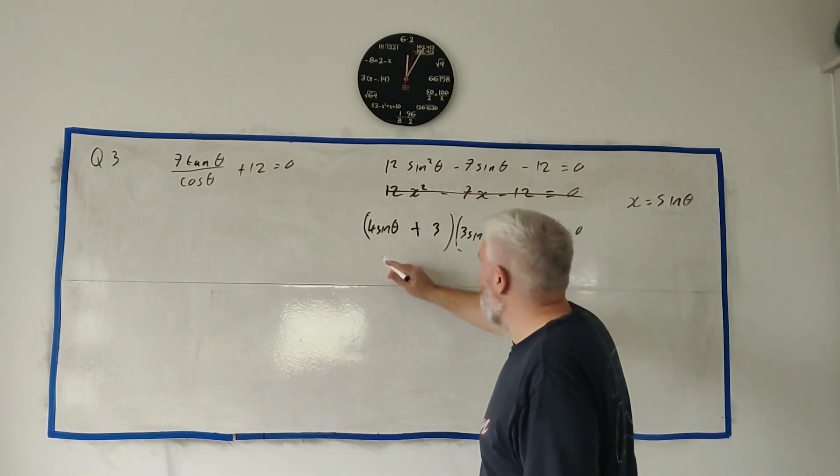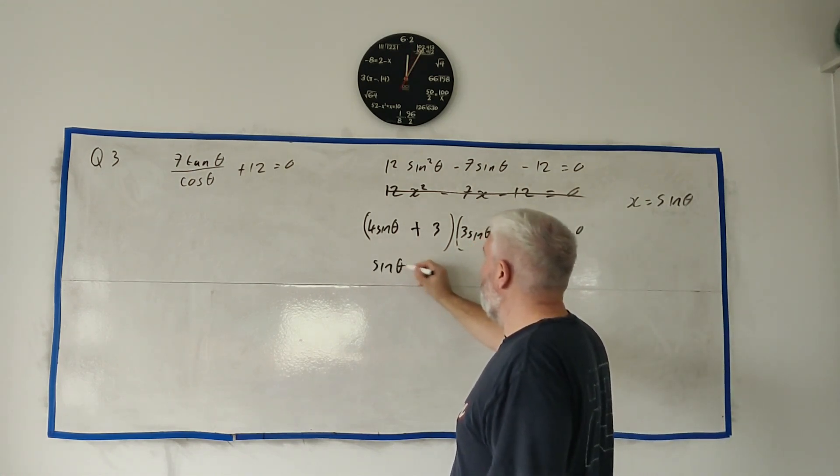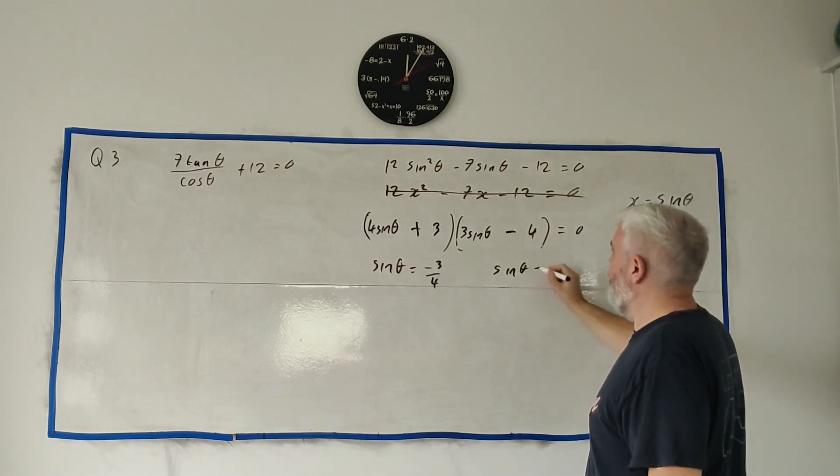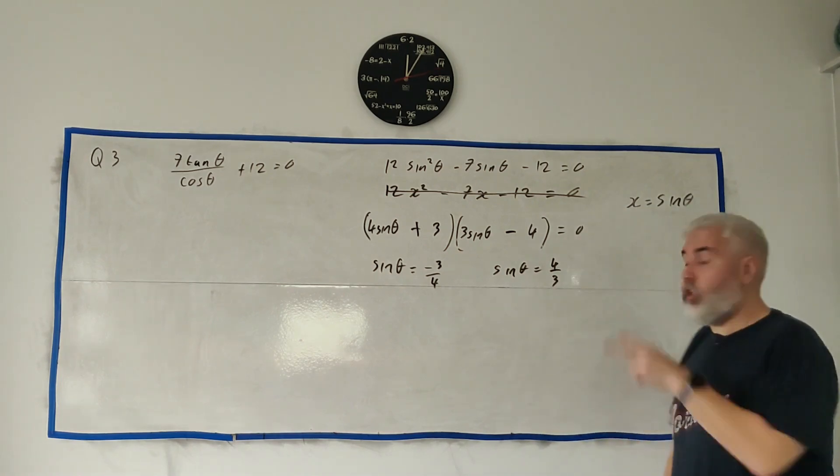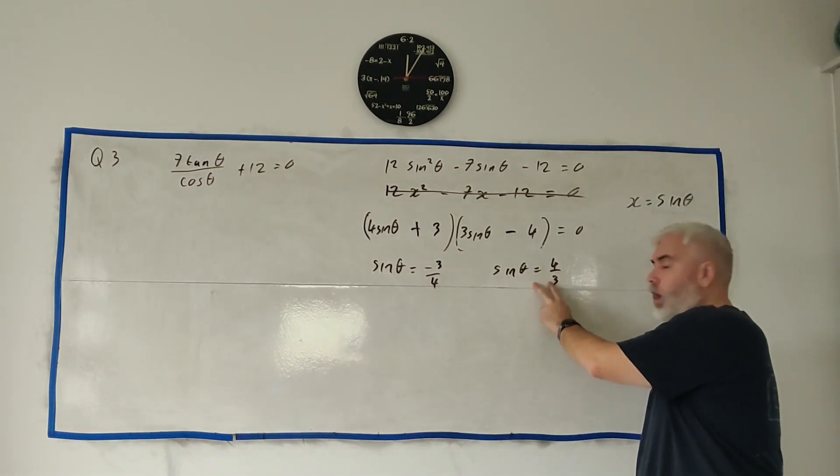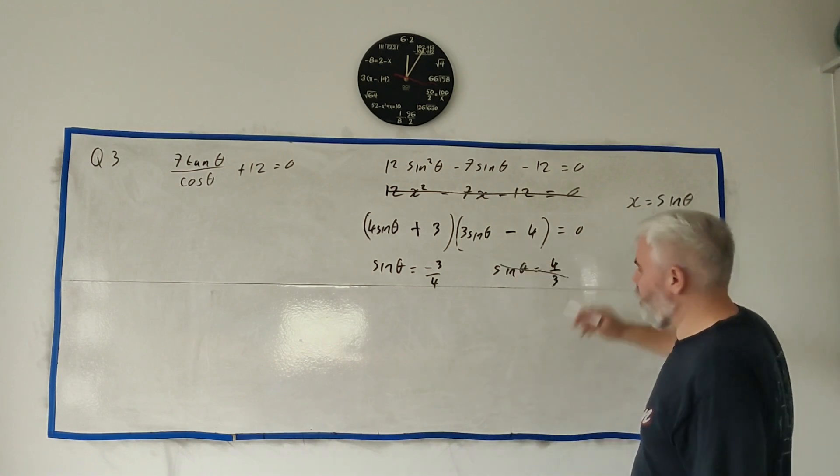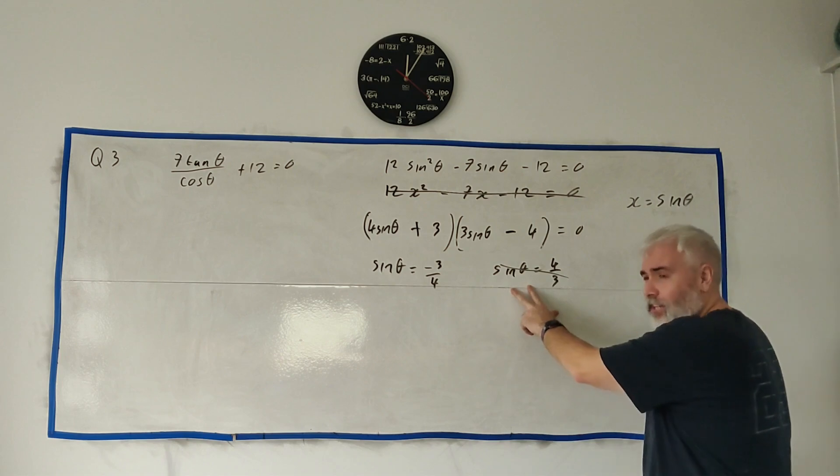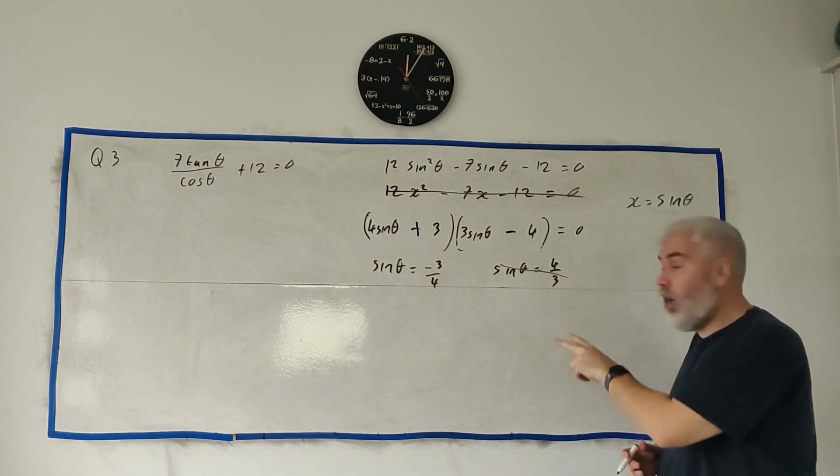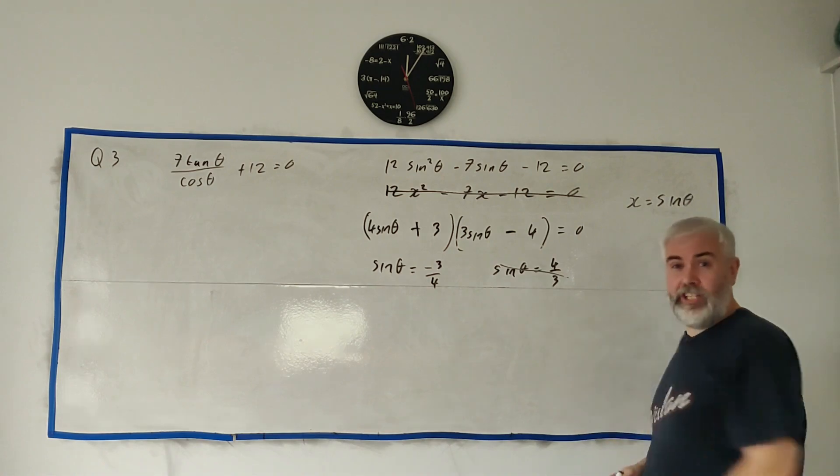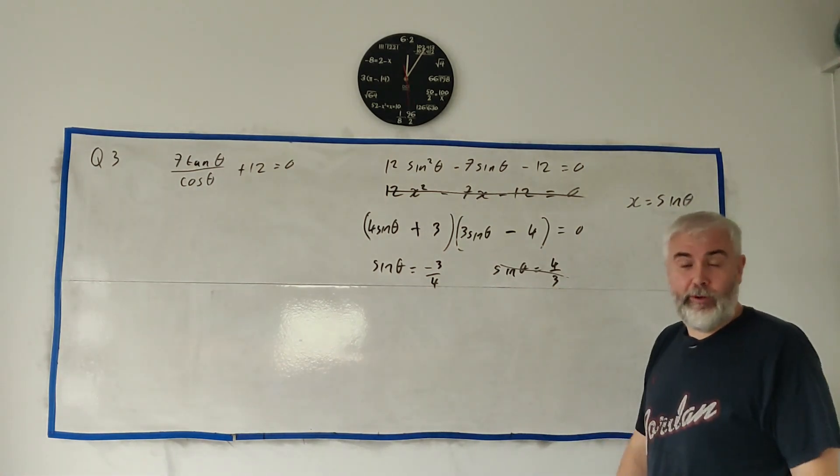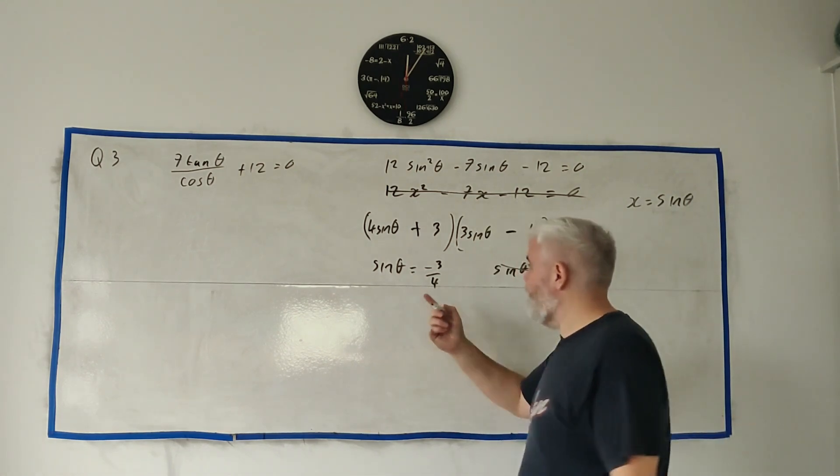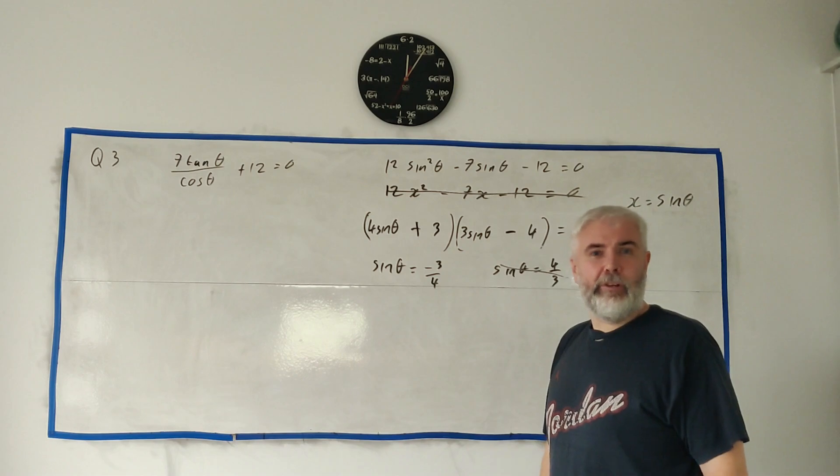These each equal 0. So that means that sine theta must equal minus 3 over 4 or sine theta equals 4 over 3. You'll lose a mark for not discounting this one. You don't have to put a line through it, I guess. You just have to not use it. But it's best to put a line through here. Tell them you're not using this. And why? Well, 4 over 3 is bigger than 1. Sine can never be bigger than 1 or less than minus 1. So that's not a real answer. Here's your answer here. Sine theta equals that.